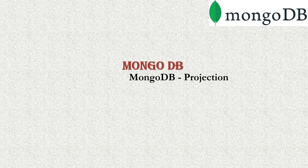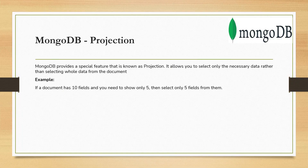MongoDB provides a special feature known as projection. As I said, it allows you to select only the necessary data rather than selecting the whole data from the document. For example, let's assume you have a document that has 10 fields and you only need to show five fields while performing the find method. How do we select only five fields out of 10, or only one or two out of three?